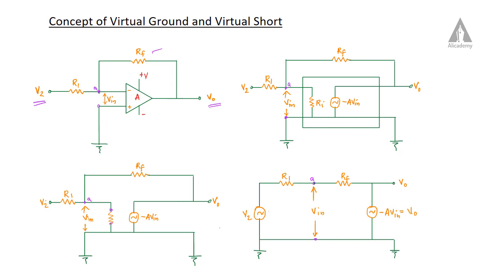The non-inverting terminal is a node. The node has a potential difference V_in, which represents the voltage difference between the two terminals. This is the equivalent circuit showing the op-amp with input impedance Ri. The output voltage is A times V_in, where A is the open loop gain of the operational amplifier. So the output voltage V0 equals A multiplied by the differential input voltage V_in.